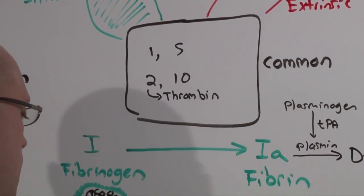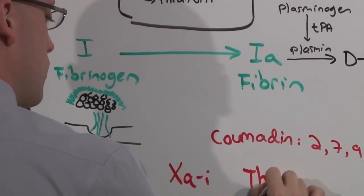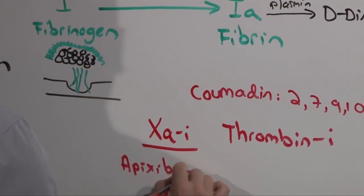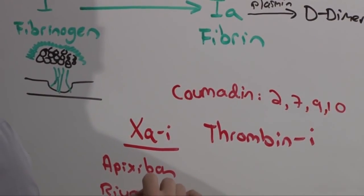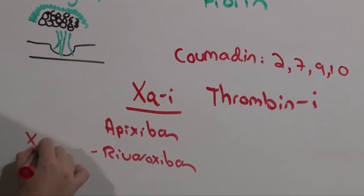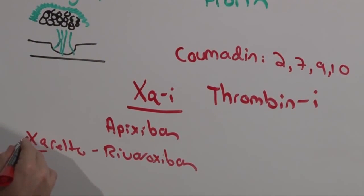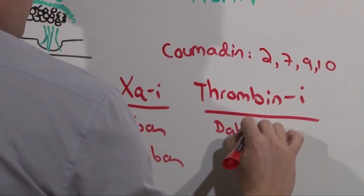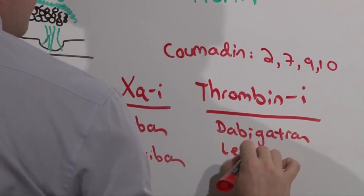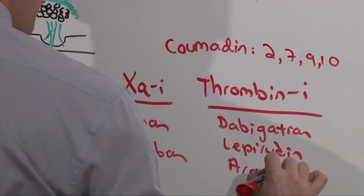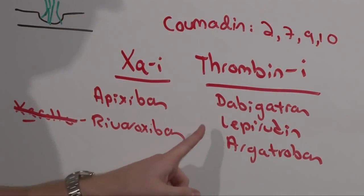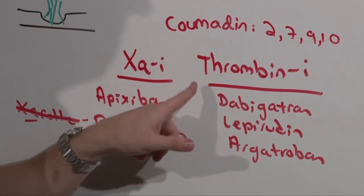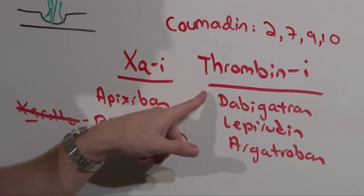You may have heard of some of the 10A inhibitors or the thrombin inhibitors. The 10A inhibitors are apixaban and rivaroxaban. Very well named drug, Xarelto, 10A-relto. Thrombin inhibitors are drugs like dabigatran, lepirudin, and argatroban. These medications you might recognize for the treatment of heparin-induced thrombocytopenia. Dabigatran is a new medication, Pradaxa, which is trying to replace Coumadin in terms of valvular diseases, as well as the use of DVT and PE.